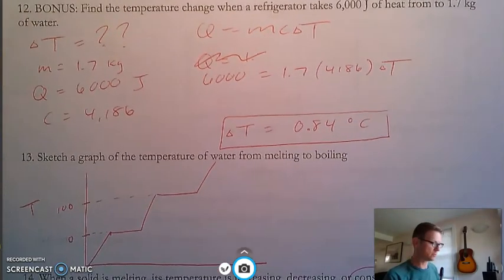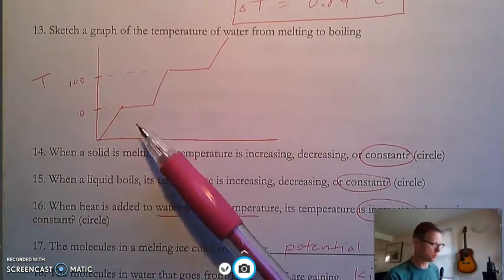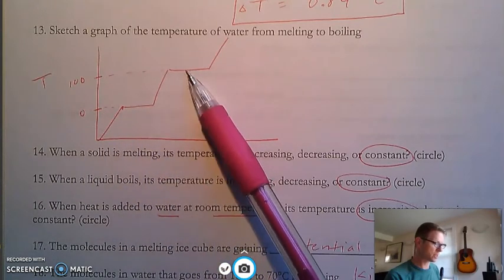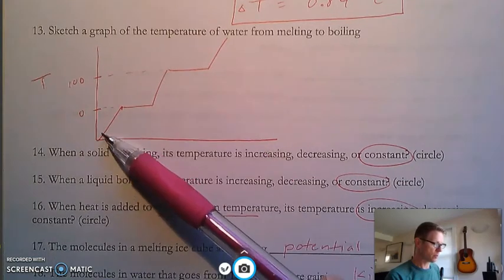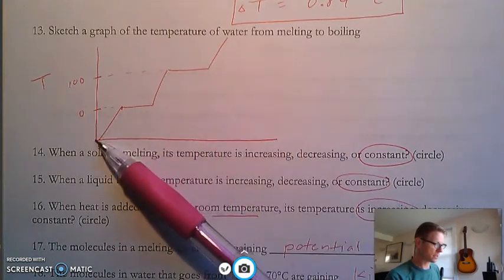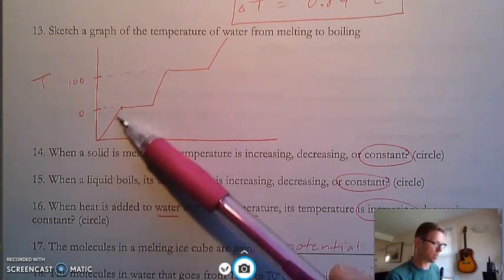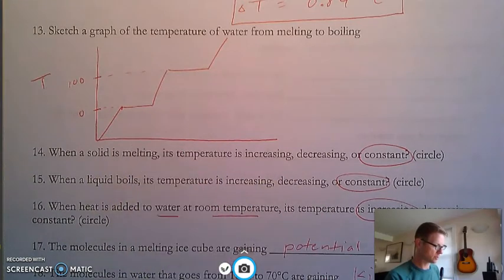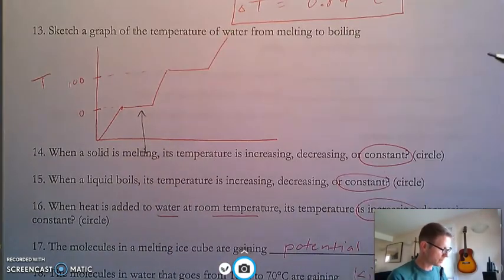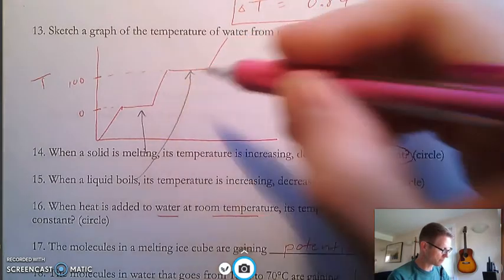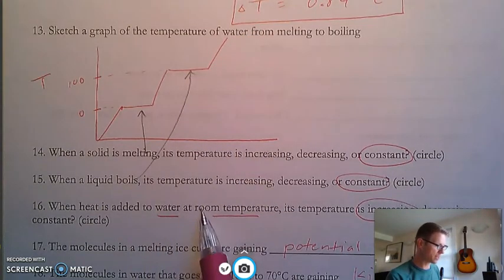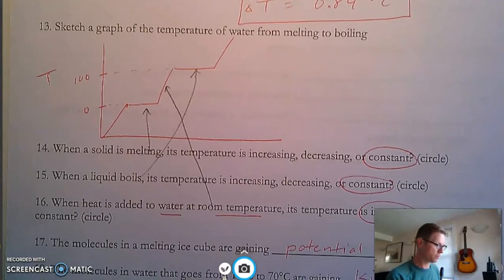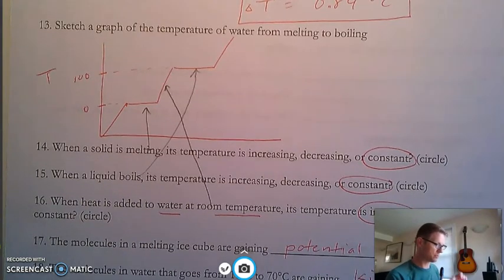Notice zero lines up with that plateau, 100 lines up with that plateau. Temperature does not increase during a phase change. Temperature does not increase during a phase change. Rewatch the phase change video if you need to, but this is a rise in temperature, rise in temperature. This is the molecules. Let's talk about molecules. When a solid is melting, that's here. Melting is right there. Boiling is right there. Temperature is constant. But if you're adding heat to water, this is right there. So the temperature is increasing.